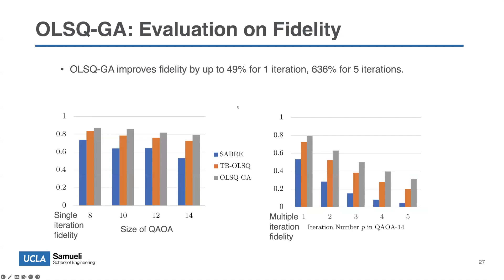Evaluating fidelity using the product-form model — a coarse approximation — we see big improvements because we have far fewer gates: absorbed swaps eliminate many gates, and TB-ASK already inserts fewer swaps than the baseline.